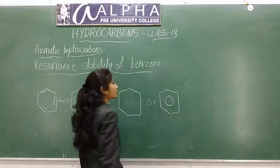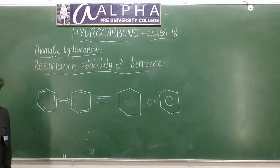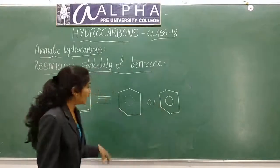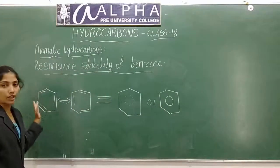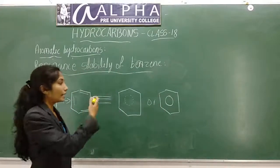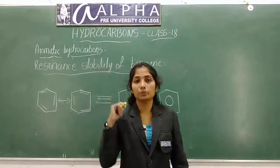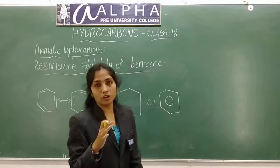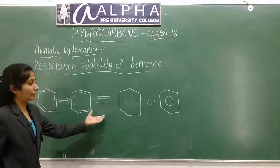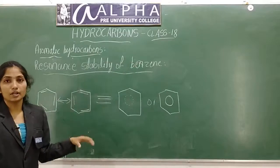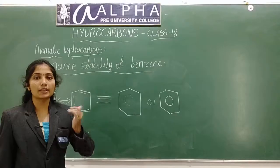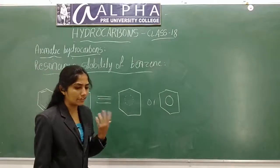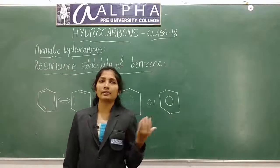Writing a circle inside the hexagon — that is the structure of benzene. Electrons are in resonance; electrons will be revolving over the whole molecule. Benzene is a resonance hybrid of its canonical structures.